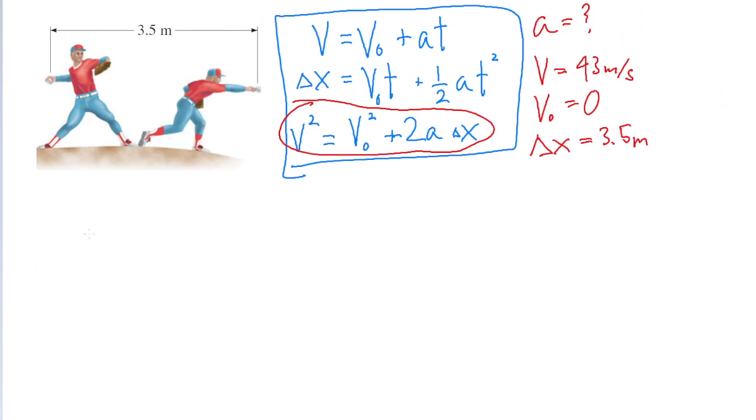So let's take this equation and algebraically solve it for acceleration, for a, since that's what we're looking for. So first things first, let's subtract from both sides of the equation v naught squared. So v squared minus v naught squared equals 2a delta x, and we're solving for a. So we'll divide both sides of the equation by 2 multiplied by delta x to get an equation for a on its own. So the acceleration is equal to v squared minus v naught squared divided by 2 multiplied by delta x.